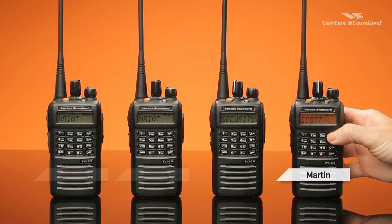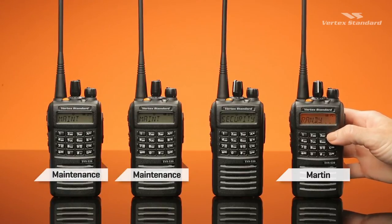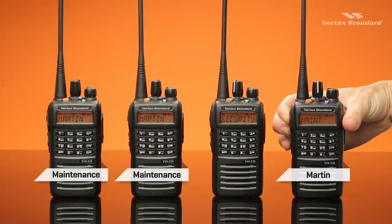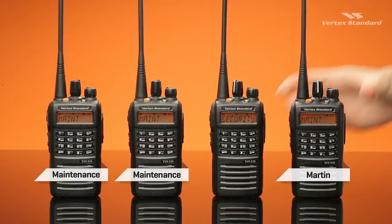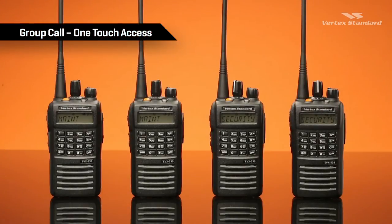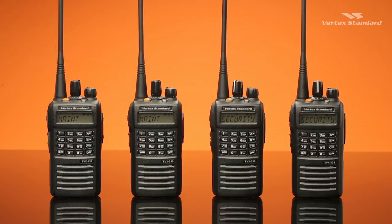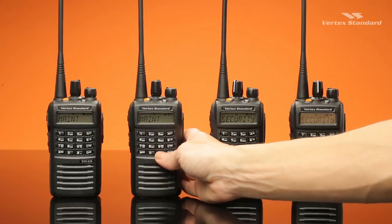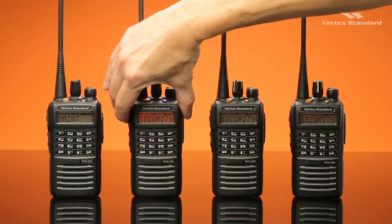If Martin needs to contact the maintenance group, he can call them without changing channels by selecting the group from his contacts list and pressing the PTT button to place the call. If you need to regularly contact a group, using one-touch access provides a fast connection and minimizes menu navigation. A button can be pre-programmed with a designated group that is frequently called.